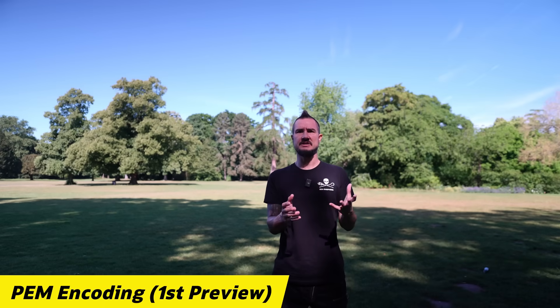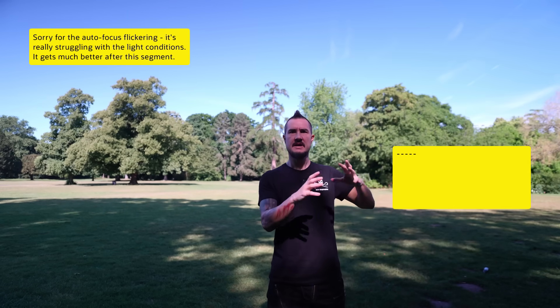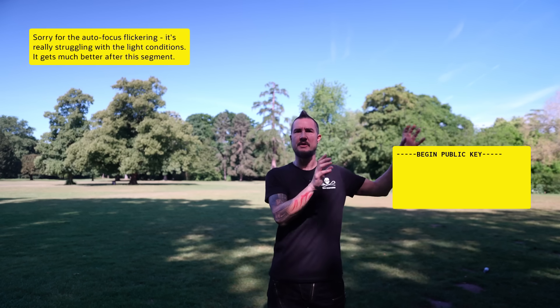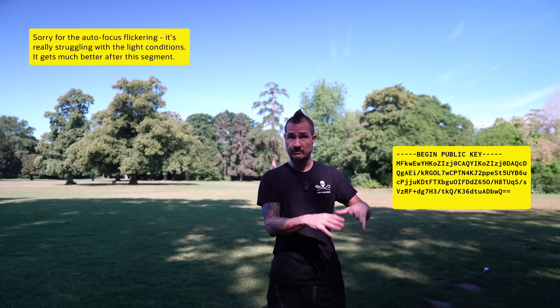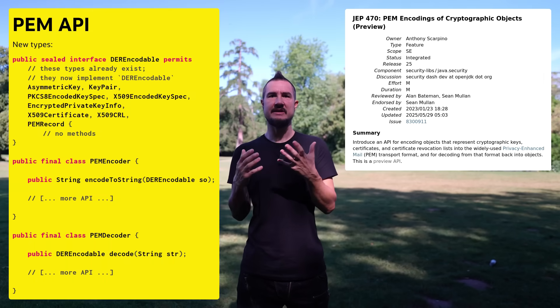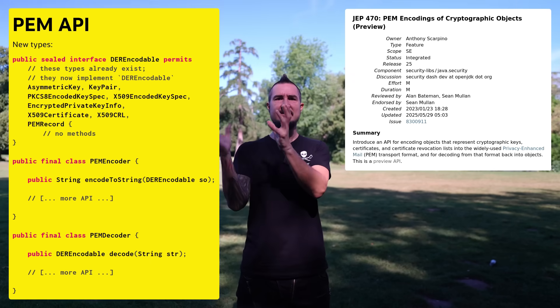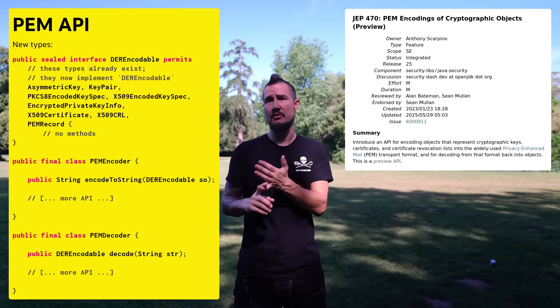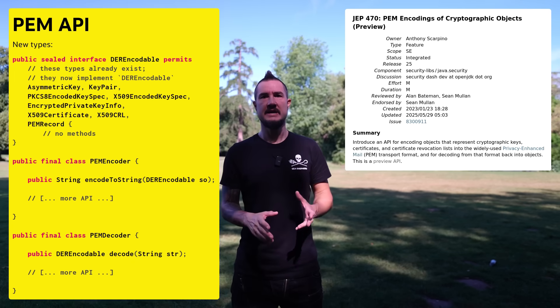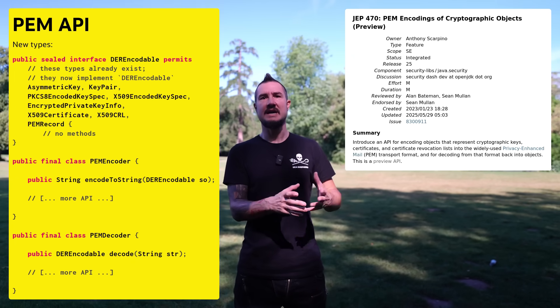You've likely seen textual representations of cryptographic keys that start with five dashes, then in all caps 'BEGIN PUBLIC KEY', followed by another five dashes, then a base64-encoded representation of the key. The most likely place where you handled them is when uploading SSH or PGP keys to GitHub or artifact repositories. Those text blocks were originally standardized to exchange cryptographic objects via email, so the standard is called Privacy Enhanced Mail, or PEM for short. Starting as a preview in JDK 25, Java gets an API that can convert between PEMs and cryptographic objects with standard representations in the binary formats PKCS8 1.2 and 2.0, as well as X.509 — covering private and public keys, certificates, and certificate revocation lists.